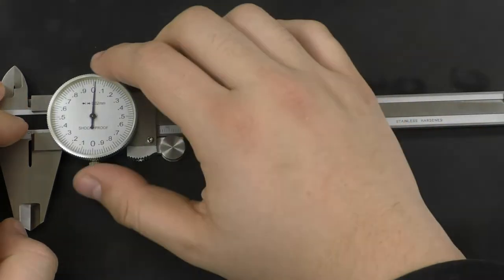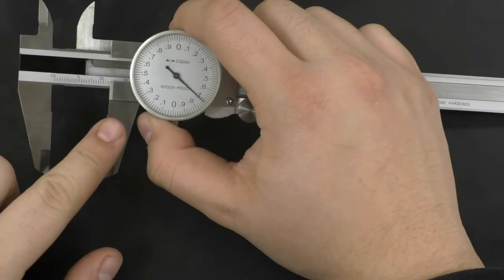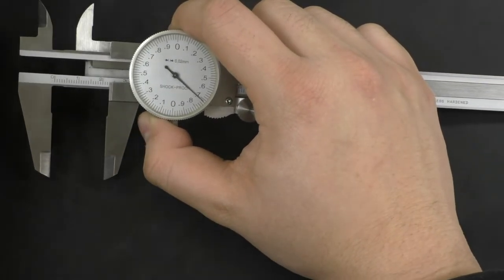First, let's go over some of the different parts of the caliper. These are the jaws of the caliper. The object that you want to measure gets placed in between these.